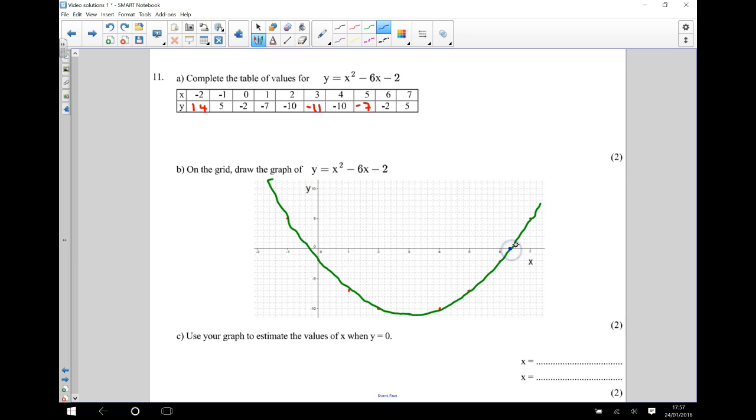So I can see that that's going to be 6.4 and that's going to be negative 0.3. So negative 0.3 and 6.4, those are my two values of x when the y coordinate is zero. Okay, thanks very much for joining me, I'll see you next time.